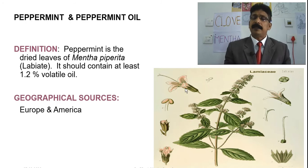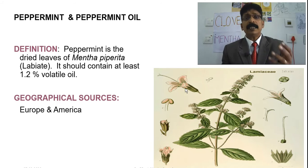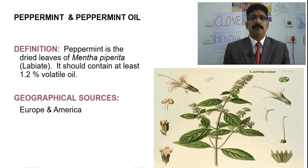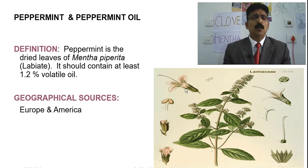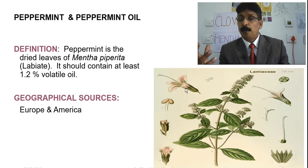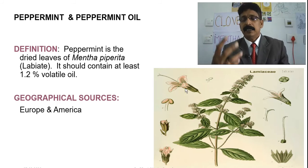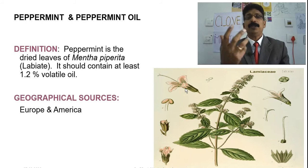Peppermint — peppermint oil — is known as oleum menthae or mentha piperita. There are many synonyms for mentha. The definition: peppermint is the dried leaf of Mentha piperita, family Labiateae, and it should contain at least 1.2 percent volatile oil. The geographical source is Europe and America, where scientists identified and classified it.